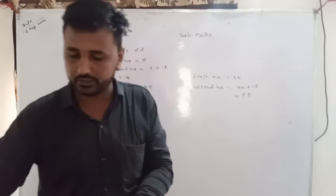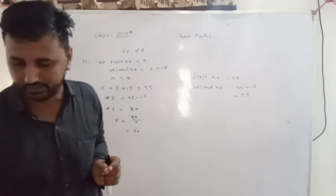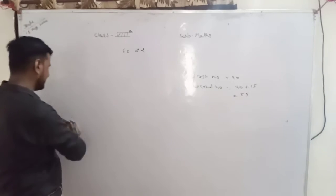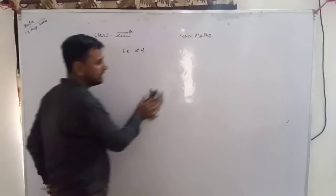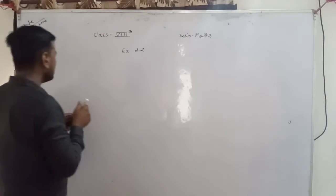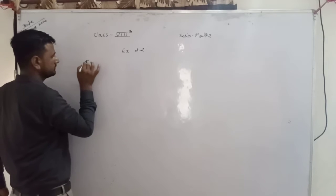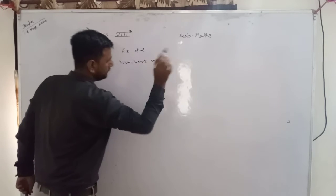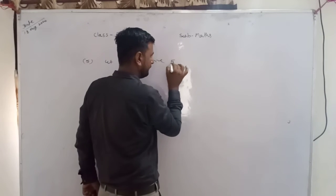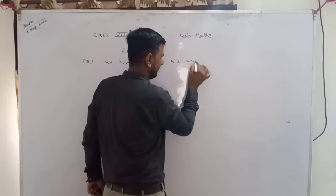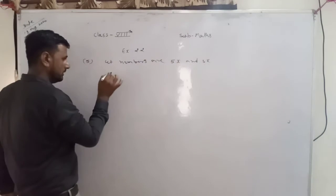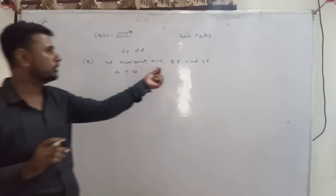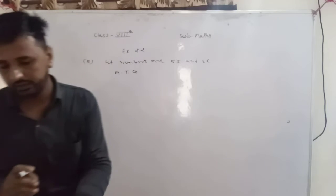अब जब भी अपने को ratio में दिये होते हैं, तो अपने ratio को attach करके एक variable लेते हैं। कोई भी variable हो सकता है: x, y, z। तो numbers अपने लेंगे: 5 ratio 3 है, तो numbers अपने लेंगे 5x and 3x।